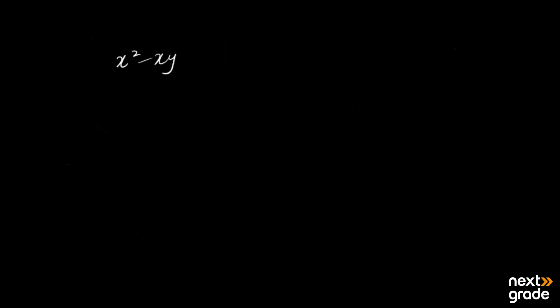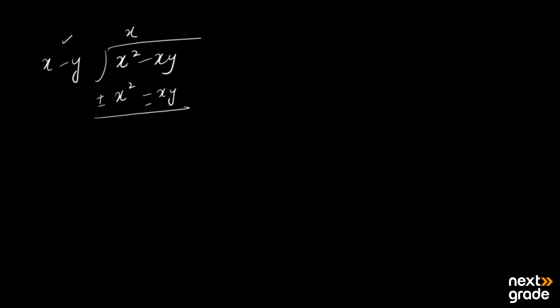Dividing x²−xy by x−y: you must always take the common factor as the divisor. Dividing by x gives x²−xy; simplifying both gives answer 0. You can see that when we properly divide and check, the answer is 0 in both cases, confirming the HCF divides both expressions completely.